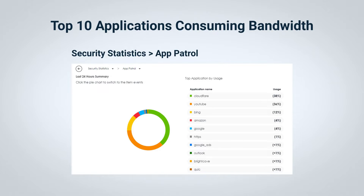The App Patrol statistics show the top 10 applications that consume the most bandwidth. We can check if any of them are non-work-related internet activities, and create policies to restrict inappropriate application usage or web access.